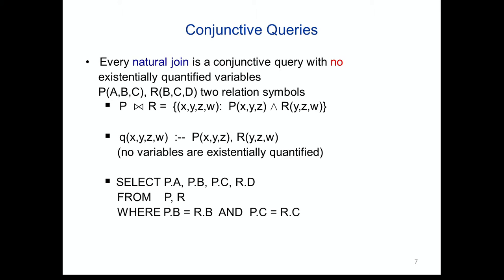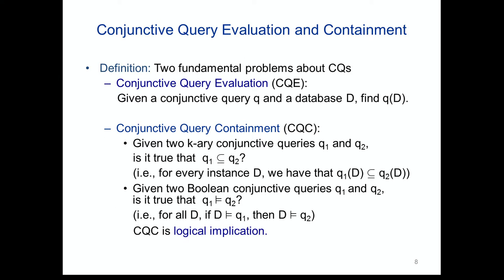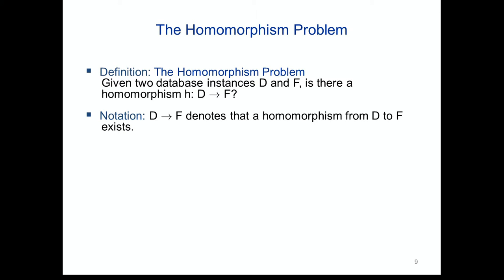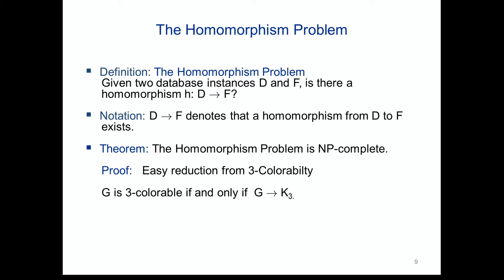Natural joins play a big role: a natural join is a conjunctive query with no existentially quantified variables. We now consider conjunctive query evaluation and conjunctive query containment — the query evaluation and containment problems restricted to conjunctive queries. We also introduced the homomorphism problem: given two databases D and F, is there a homomorphism from the first to the second?